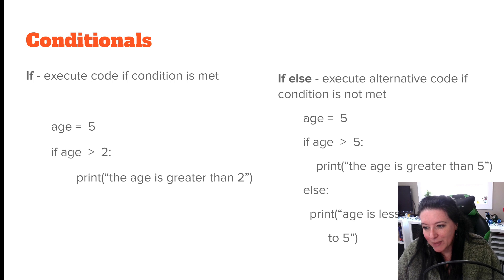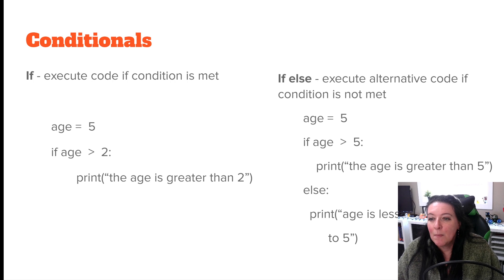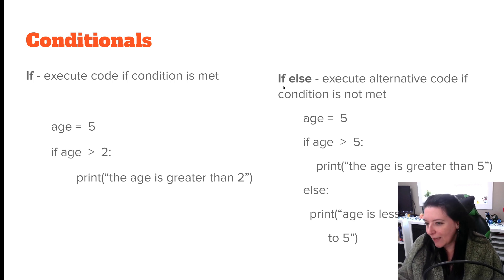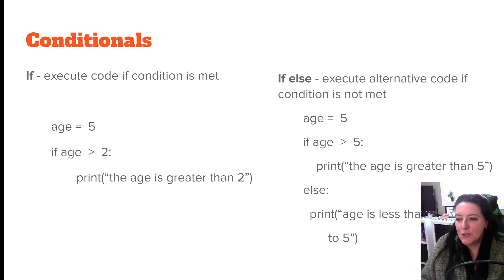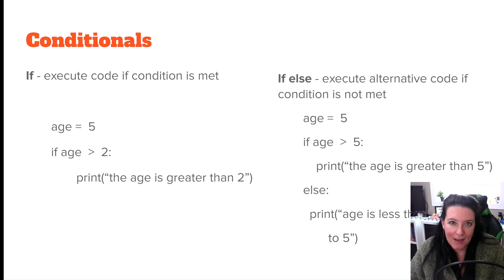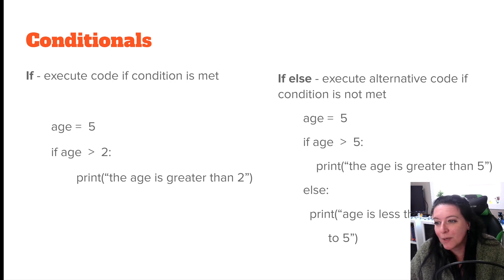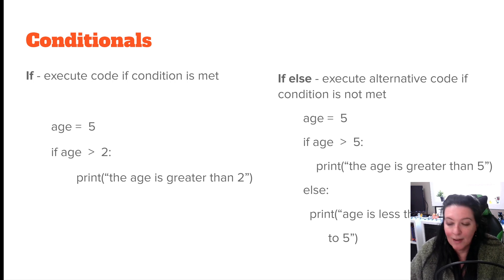We can have an if-else statement. We specify the age equals a number, then if age is greater than five, print 'the age is greater than five.' Then we add an else statement — if the age is not greater than five, print 'age is less than or equal to five.' So you're telling it what to do if the condition is not met. With if-else, if the condition is met do one thing, and if it's not met, do something else.